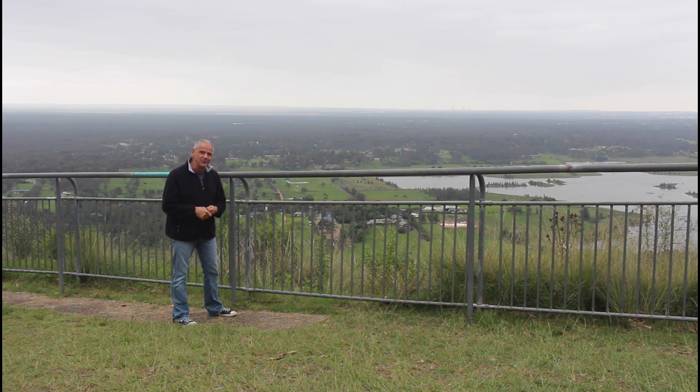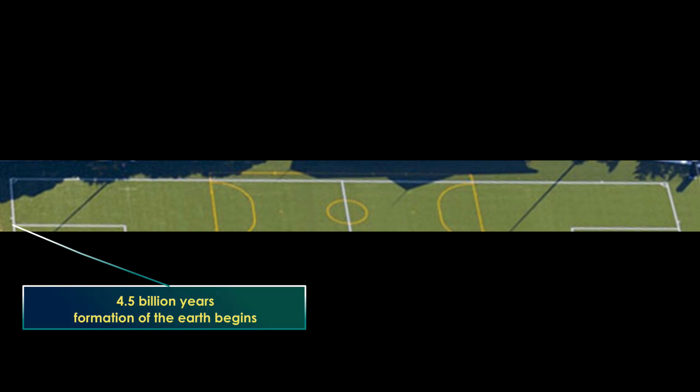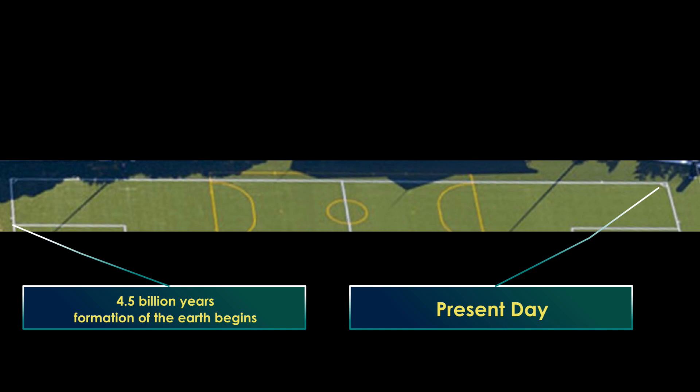We need to go back a few hundred million years. The period of time I'd like to share with you is between 500 to 200 million years ago. If we go back to the first clip in this series, I used the length of a sporting field to give a visual reference of the formation of the earth from 4.5 billion years through to the present day. If we use this again and map out this period of 500 to 200 million years, whilst that might seem a long time ago, it isn't that long when you look back to 4.5 billion years as the start of the formation of the earth.